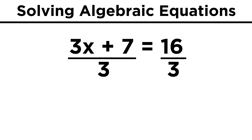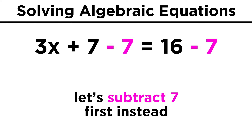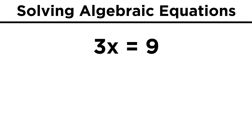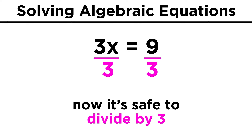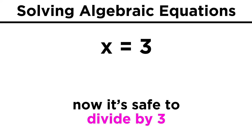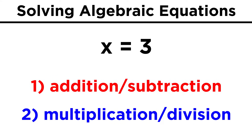So instead, let's subtract seven first. That gives us 3x = 9, and then we can divide to get x = 3. So we can see that it will typically be the case that we should do addition and subtraction before we do multiplication and division when solving algebraic equations.